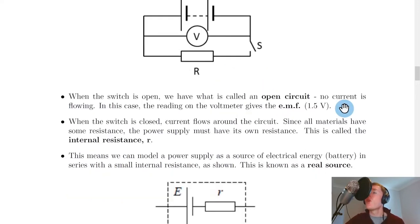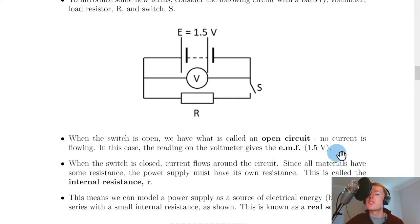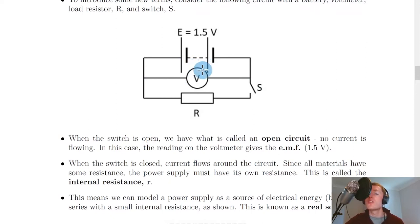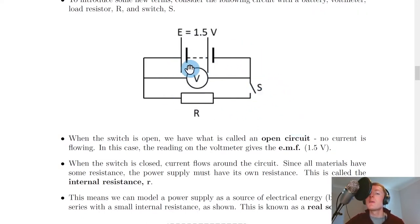In an open circuit, no current is flowing because the switch is open. In this case, the reading on the voltmeter gives the EMF — for example, 1.5 volts. So when no current is flowing and we measure the voltage across the battery, what we get is the EMF.